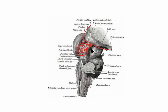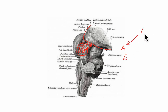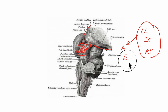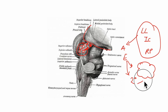The medial geniculate body has afferent and efferent connections. It receives afferents from the lateral lemniscus, from the fibers of both inferior colliculi, and also from the ascending reticular pathway. Regarding the efferents, it gives out acoustic radiation that goes to the auditory area of the cerebral cortex. It also gives out efferent fibers to the secondary somatosensory area of the cerebral cortex.